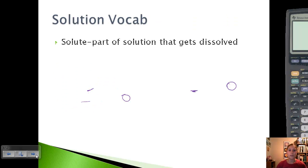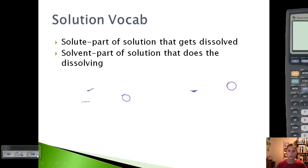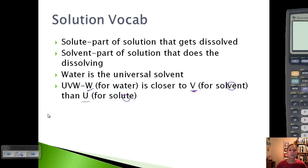Let's go over some solution vocabulary first. The solute is the part of the solution that gets dissolved - like Kool-Aid sugar powder. The solvent is the part that does the dissolving, like water. Water is the universal solvent. One easy way to remember: the W in water is closer to the V in solvent in the alphabet, so water is a solvent. Solvents dissolve, and solutes get dissolved.